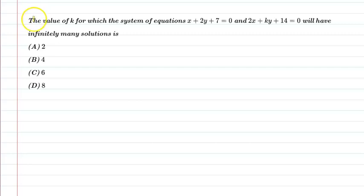Hello students, let us understand the following question. The value of k for which the system of equations x plus 2y plus 7 equal to 0 and 2x plus ky plus 14 equal to 0 will have infinitely many solutions.